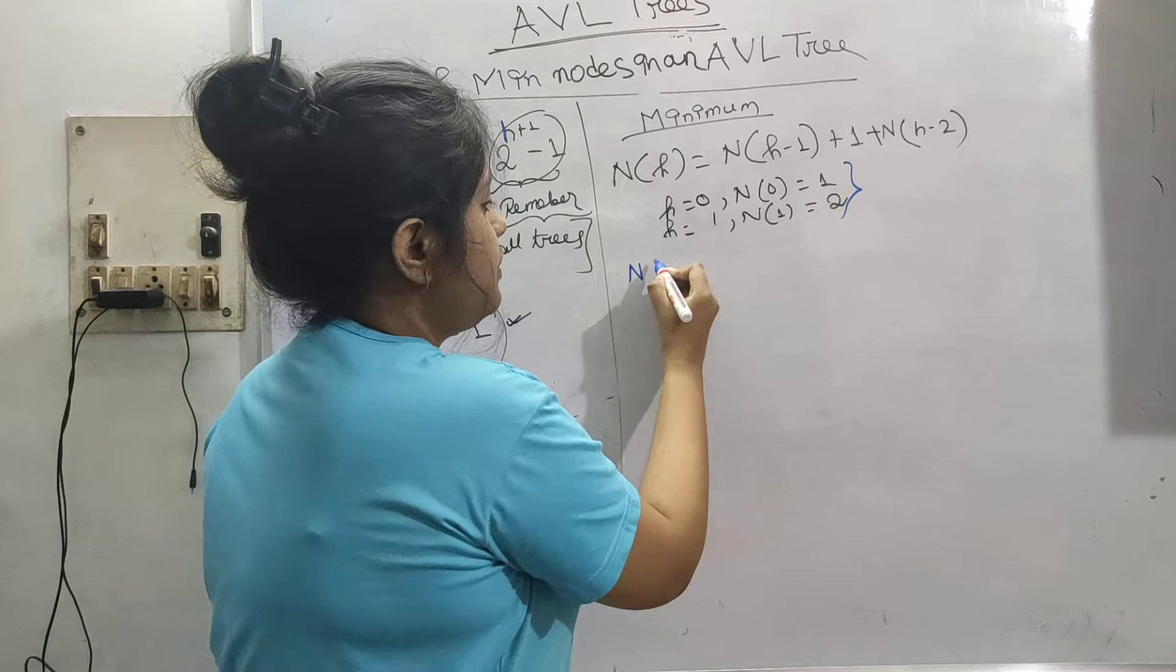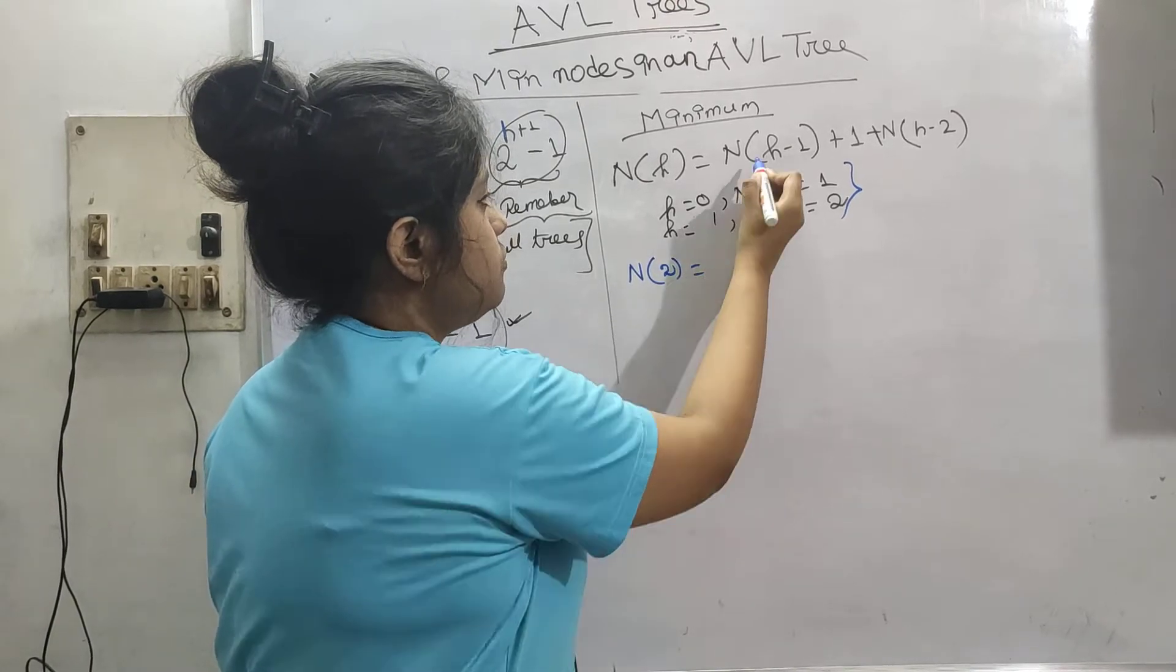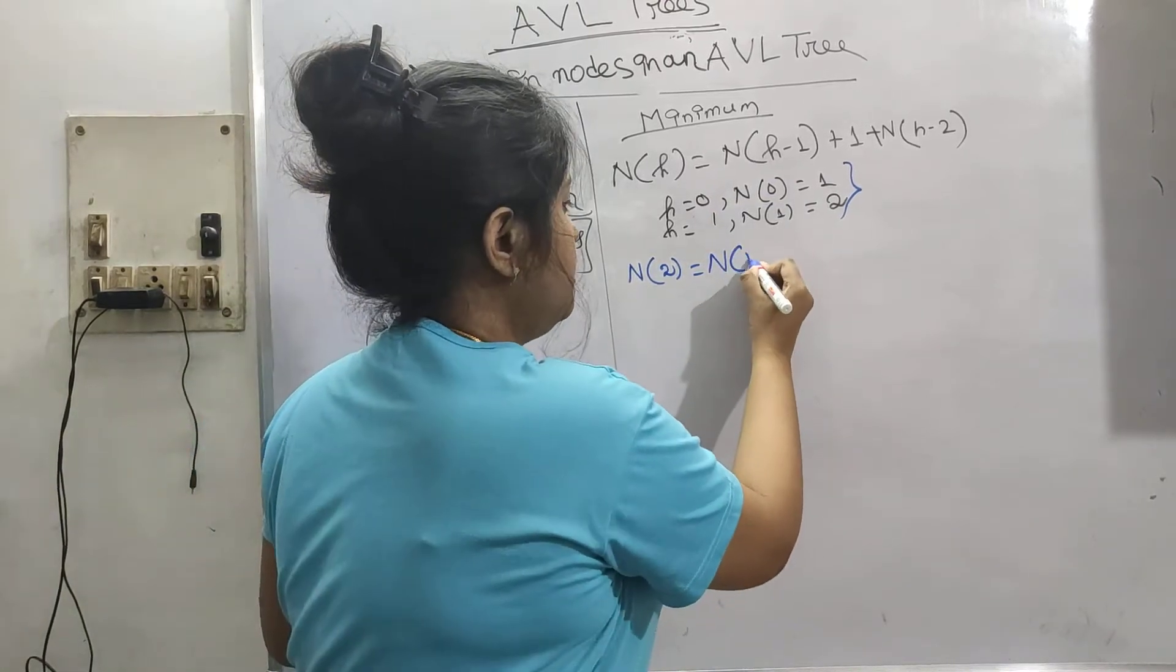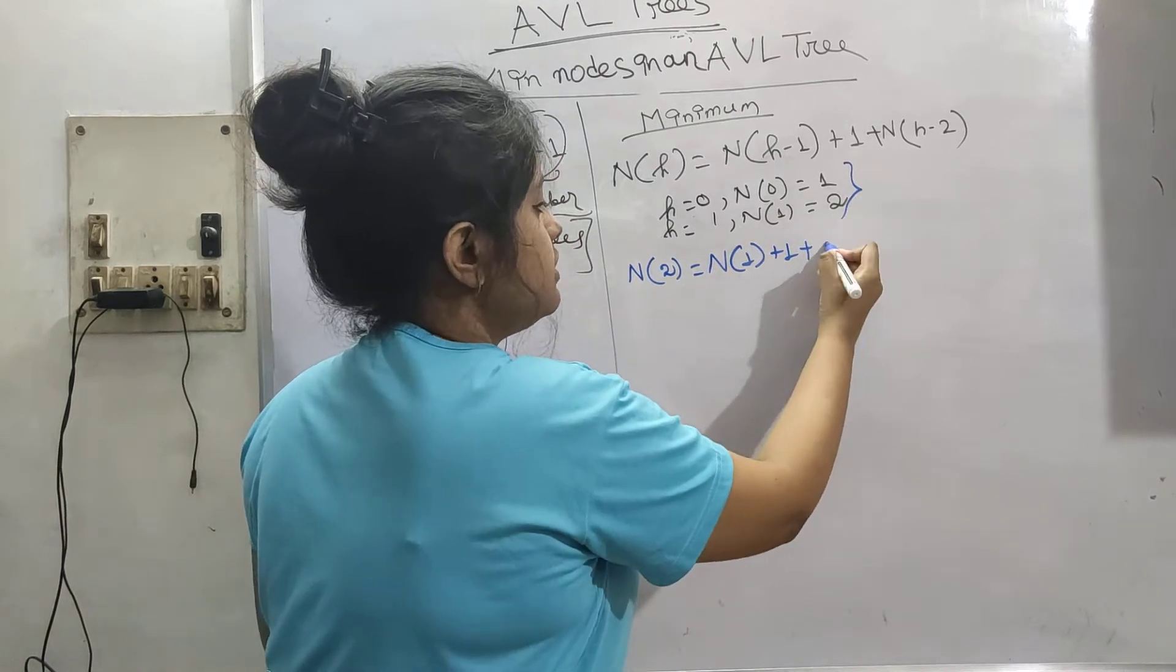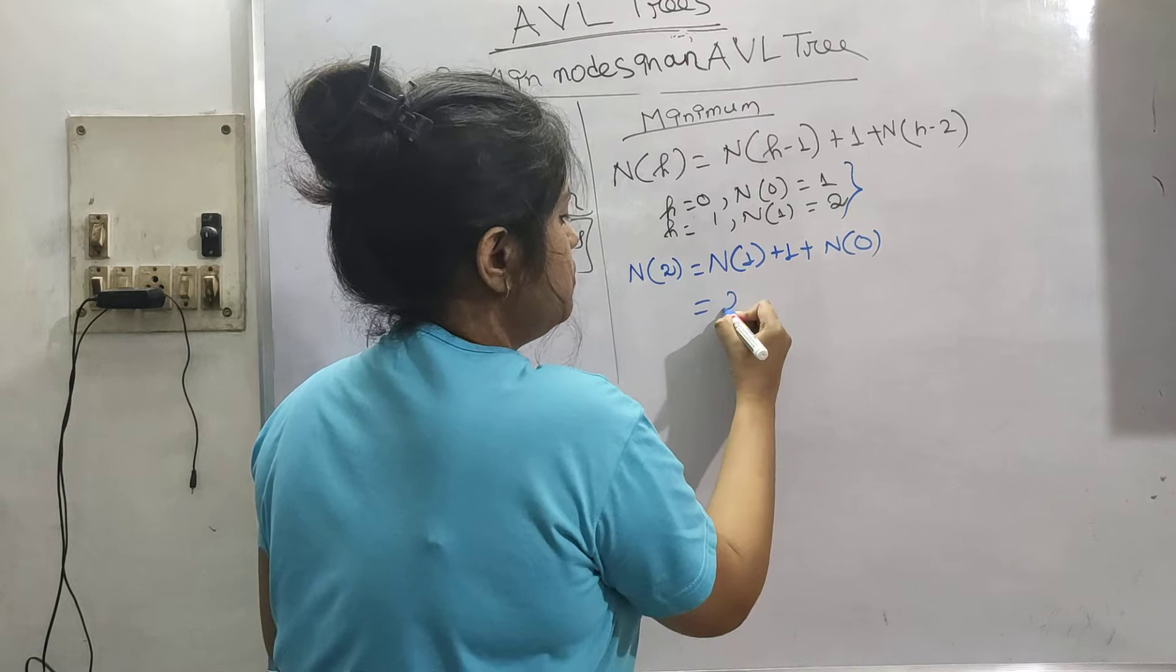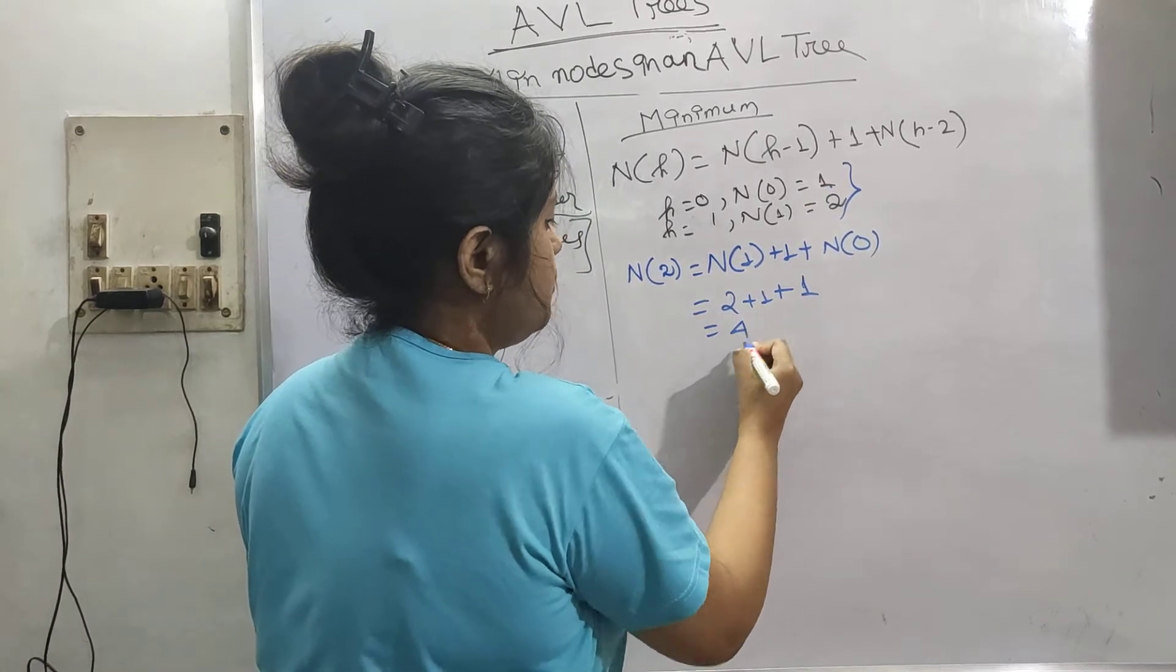Like for now we have to find for n equals 2. N of 2: put it here, n of 2 minus 1 is n(1) plus 1, and n of 2 minus 2 is n(0). N(1) means 2 plus 1 plus n(0) means 1, so this is 4.